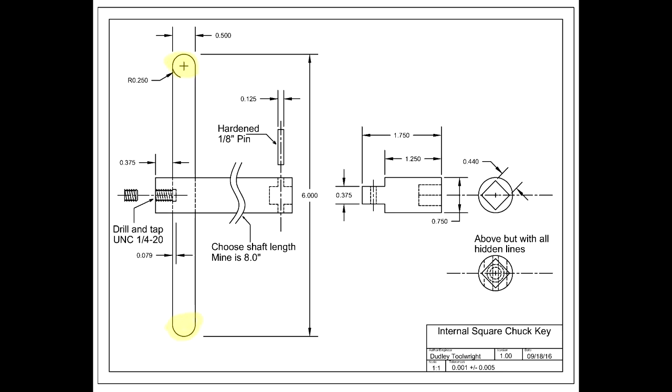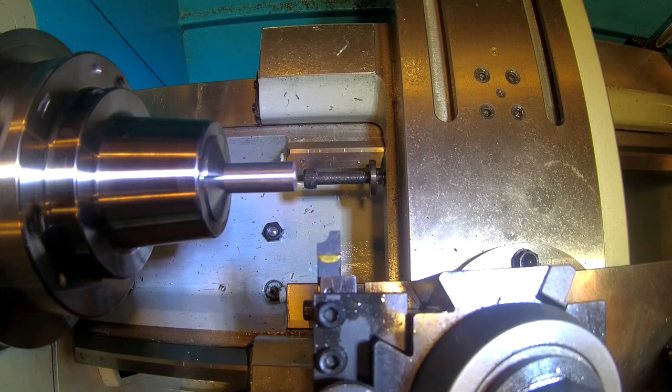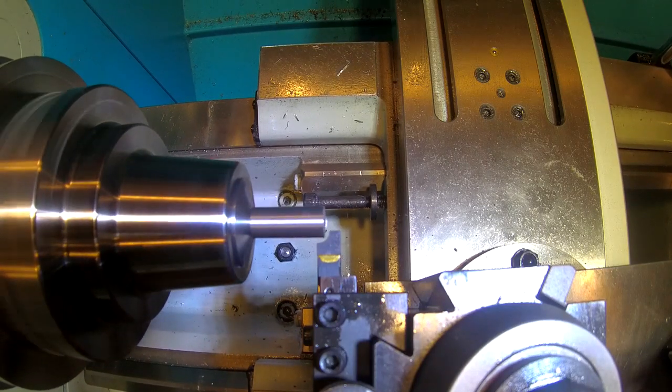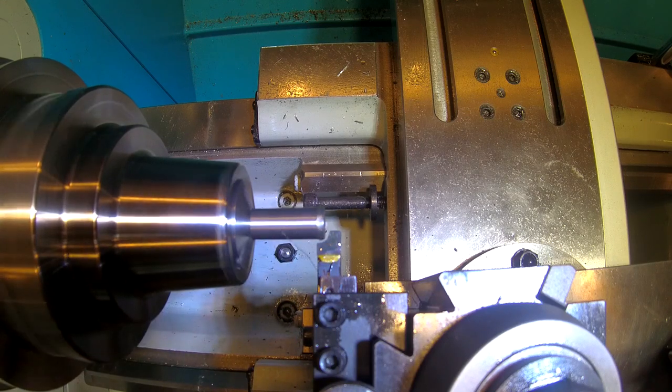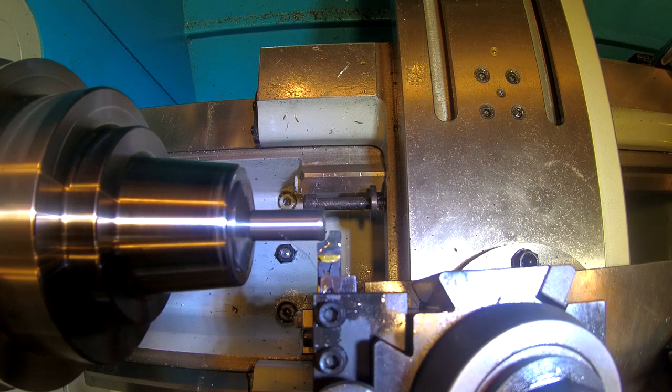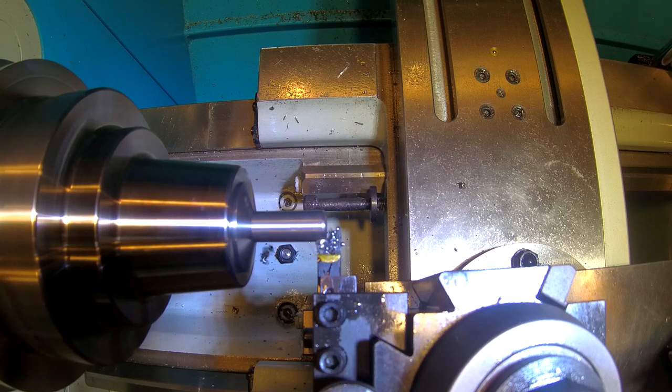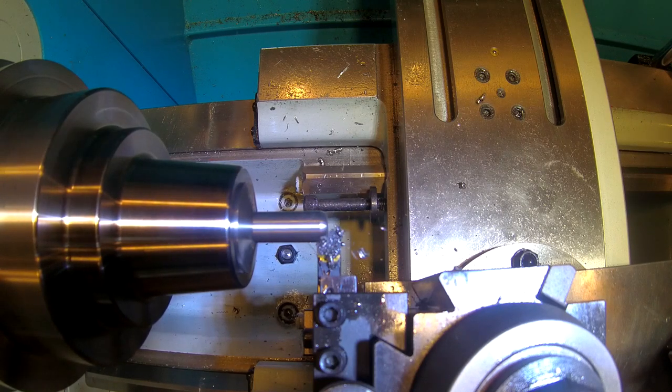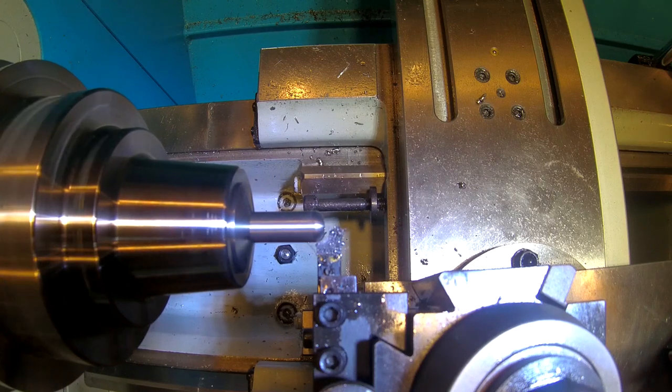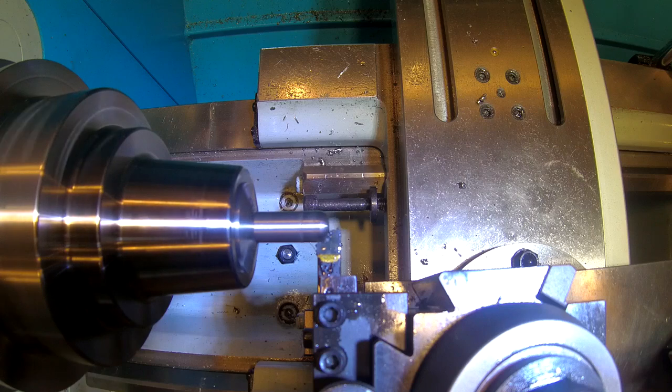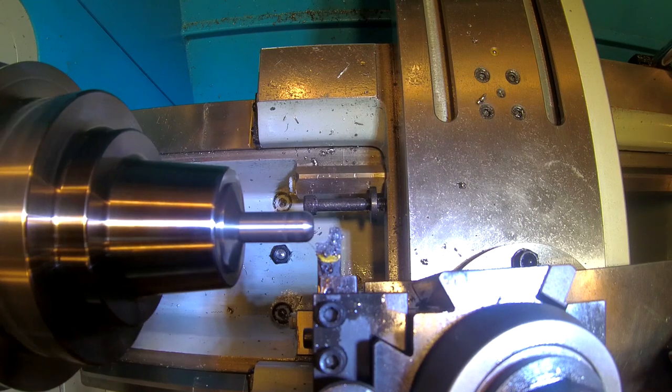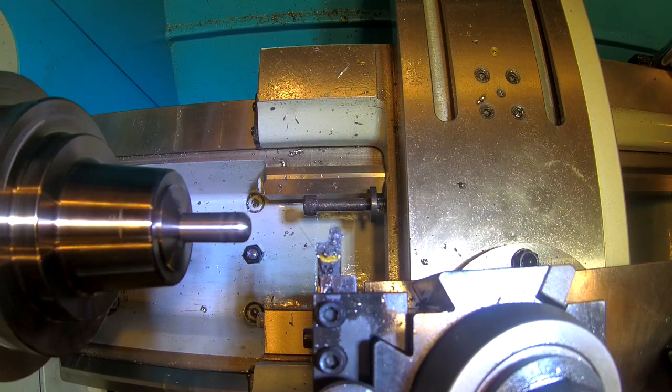And this concludes the main handle section, at least as far as the lathe work is concerned. So let's move on to the cross piece on the handle and round over the edges. And that finishes one side, let's do the other side.